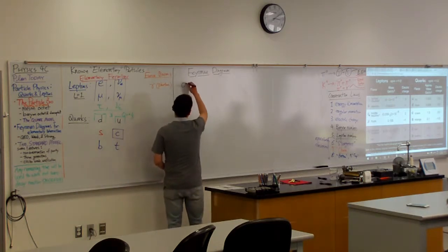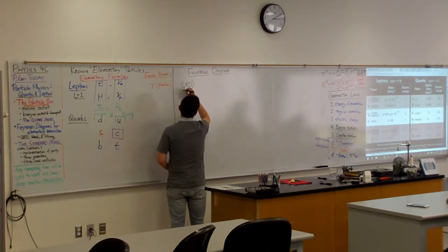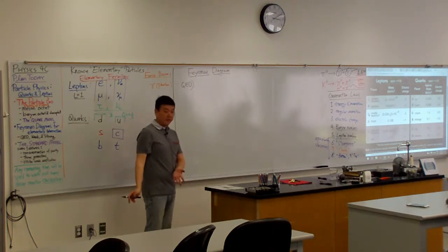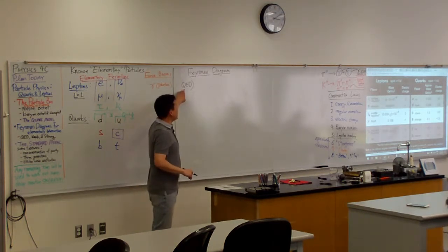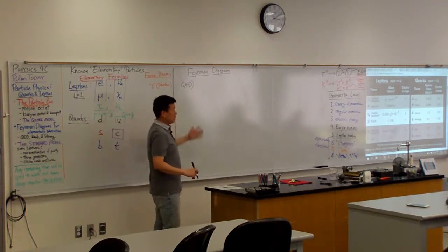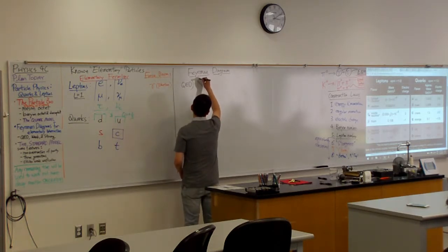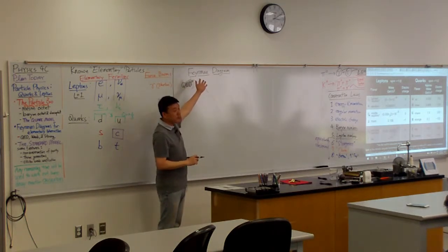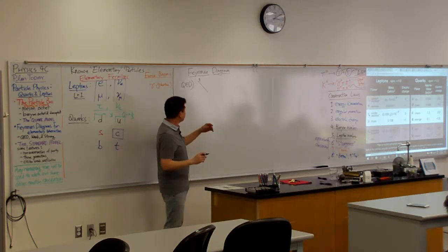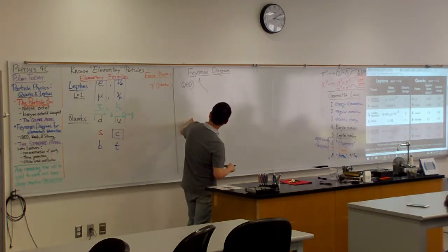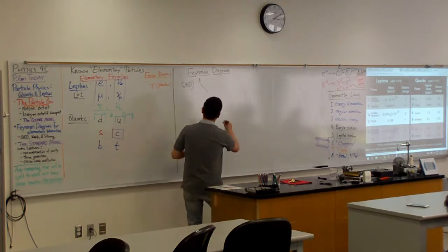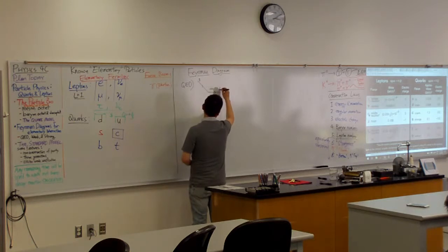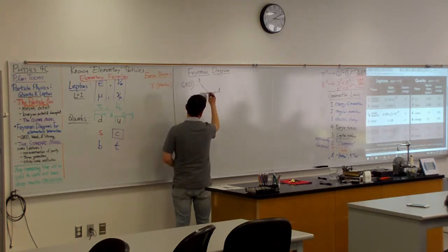In QED, what you are looking at is interaction of a charged particle with electromagnetic fields or photons. So QED elementary vertex is actually pretty simple. It's a charged particle comes in. It doesn't have to be fermion. It could be anything. Charged particle comes in, goes out, and it changed direction because it got hit by a photon.